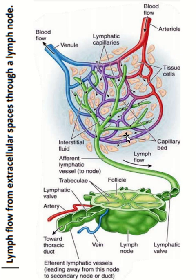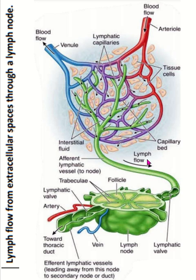This is a schematic diagram, so the view of this figure is not applicable because it is not a physical structure. Here a cross section of the lymph node is present within this figure for easy explanation of the lymph flow through the lymph node. This figure primarily shows the structure-function relationship. It explains how lymph flows through a lymph node, which is critical for understanding the lymphatic system function.